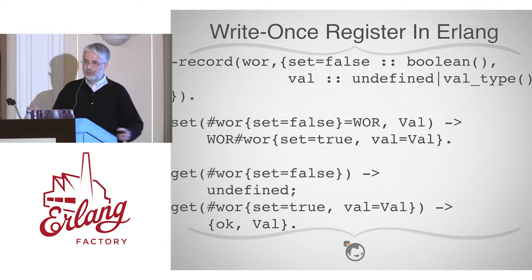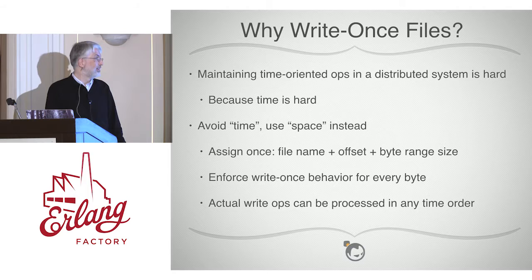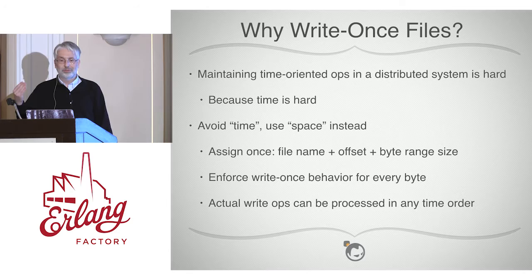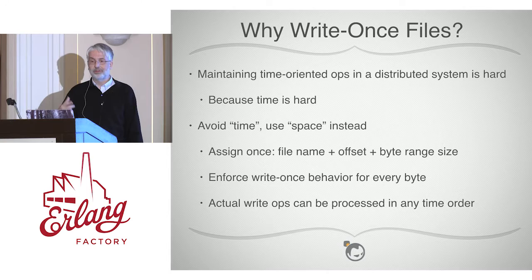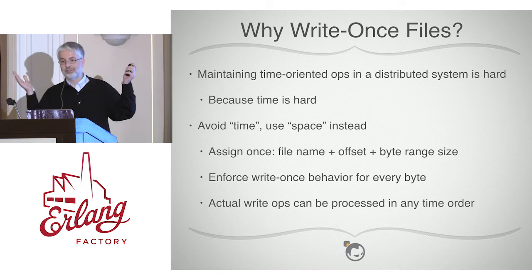Why write-once files? Because time is hard, and in distributed systems time sucks even more. So we shift the problem to dealing with space instead — the service will assign an opaque name or handle. In Machi's case it's semi-opaque and parsable. You'll get a file name and a byte offset for your write, and the system can process that space in any time order whenever it gets around to using it.